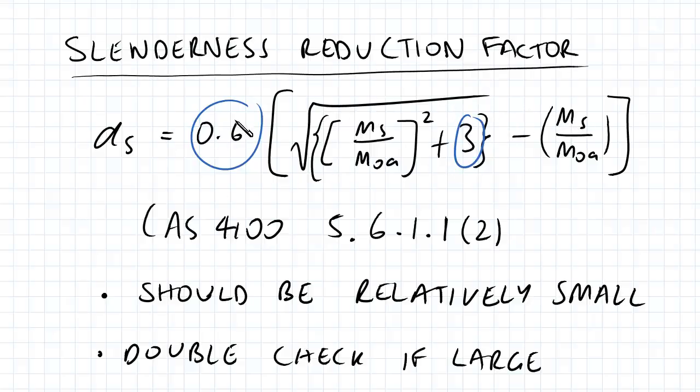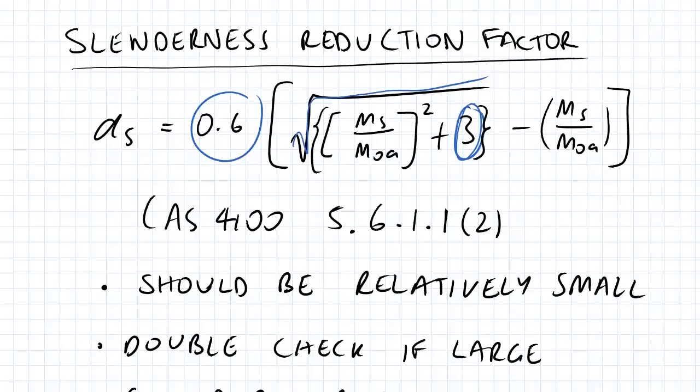Basically, a lot of people forget to multiply the whole value by 0.6, and it's important to consider that this plus 3 right here is within the square root. It's a commonly forgotten thing and I just don't want you guys to make that mistake in your exams.